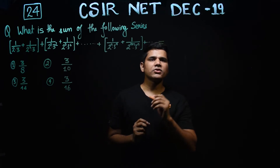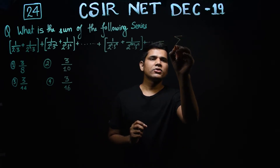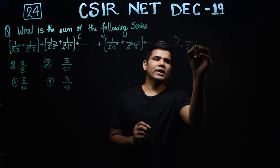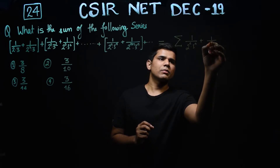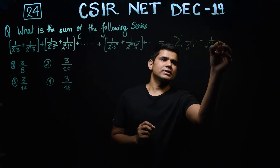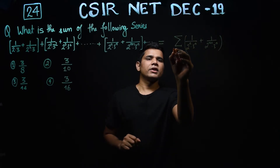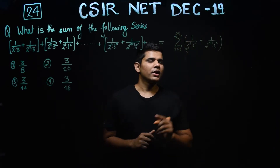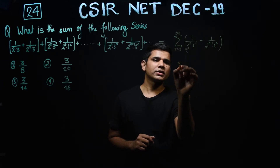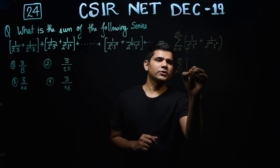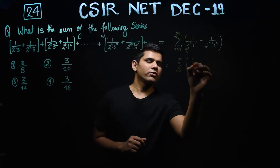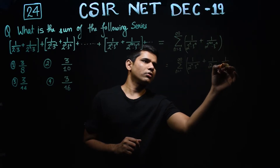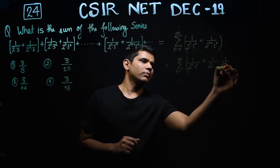By general form I mean writing it in summation form. You can write this series in summation form like this, because this is the nth term, and you vary n from 1 to infinity. Now you can take this 2 out of here, and what you get is: 1 over 2 to the power n times 3 to the power n, multiplied by one-half times 1 over 2 to the power n times 3 to the power n.